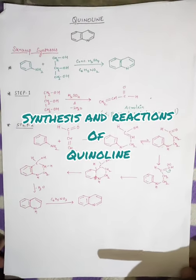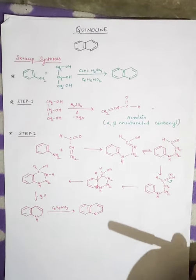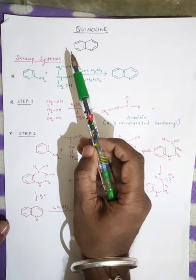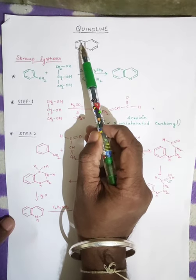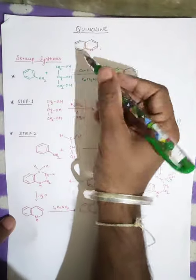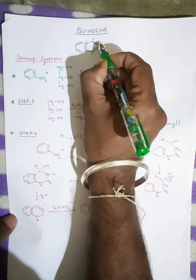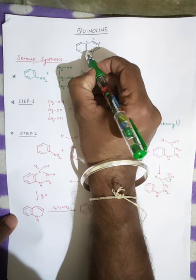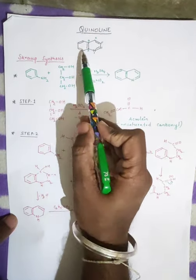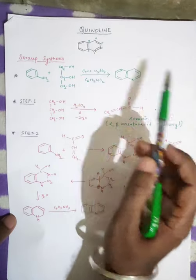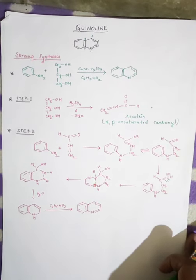Hello everyone, welcome to Win Chemistry. Today we are going to discuss one more heterocyclic compound which is known as quinoline. Quinoline is a heterocyclic compound containing a pyridine nucleus fused with a benzene ring at the second and third position of pyridine. It is also known as benzopyridine.